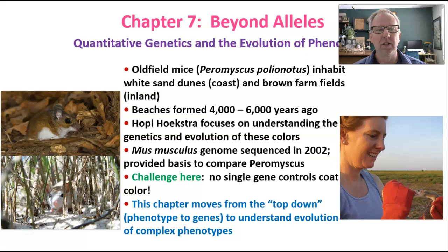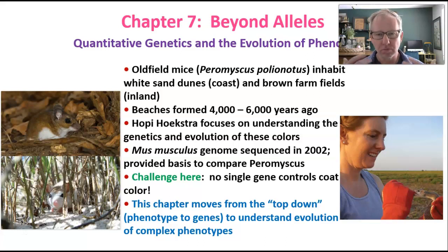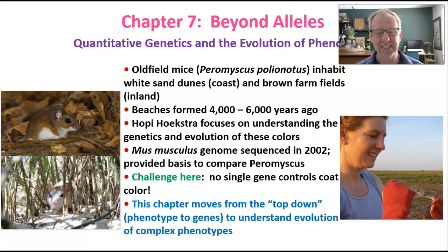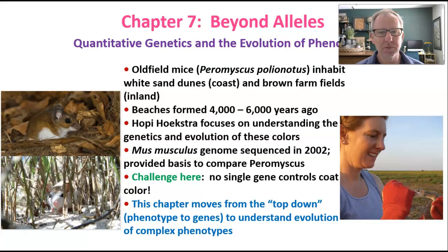Most phenotypes are controlled by more than one gene. In our last chapter, chapter six, that mainly focused on natural selection and genetic drift, those concepts were mainly addressed by examining one gene that has multiple alleles. But many phenotypes have much more complex genetic control, such that multiple genes are potentially affecting the same phenotype. Disentangling the genetics that controls these kinds of phenotypes can be quite challenging, but there are tools that have been developed and we are able to understand the complex genetic basis of phenotypes and study their evolution.